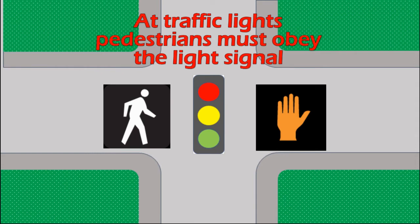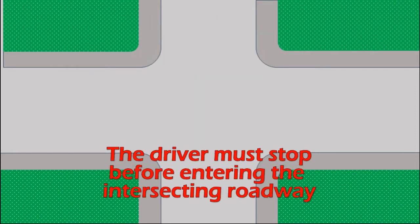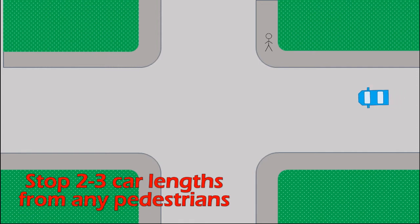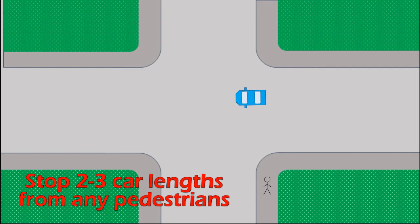At intersections controlled by traffic signals, pedestrians must obey the traffic signal. Drivers must always yield to pedestrians even if they are turning right or left. If the pedestrian is on the other side of the roadway, the driver must stop before entering the intersecting roadway, taking care to not block the crosswalk. And if the pedestrian is on the side of the roadway closest to you, you must stop two to three car lengths away to avoid crowding the pedestrian.